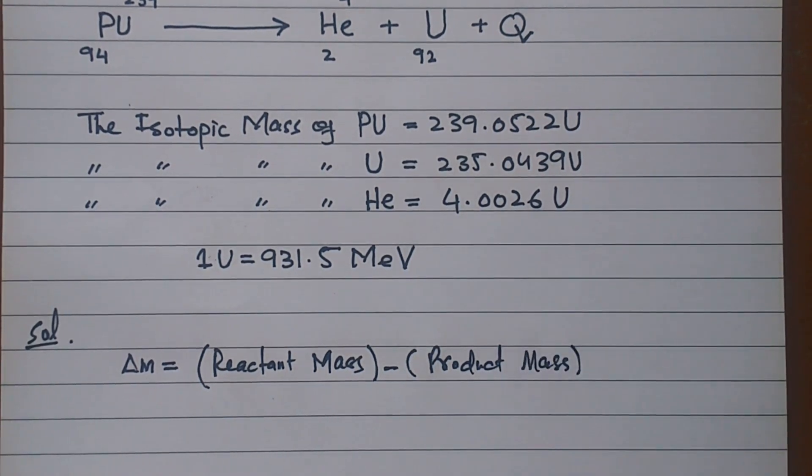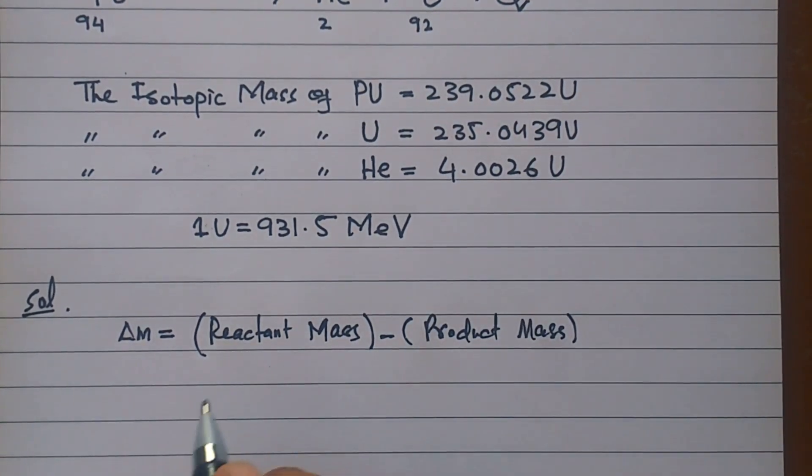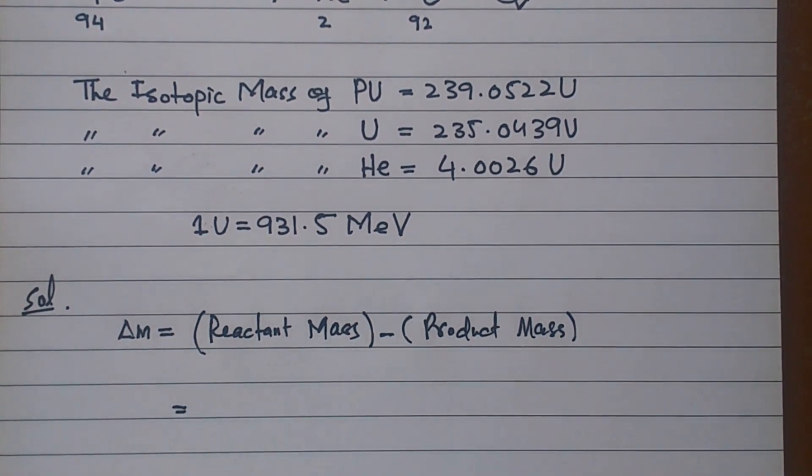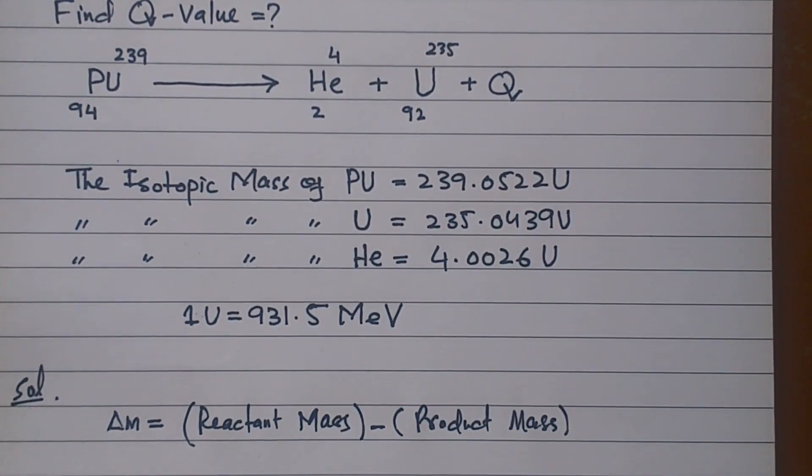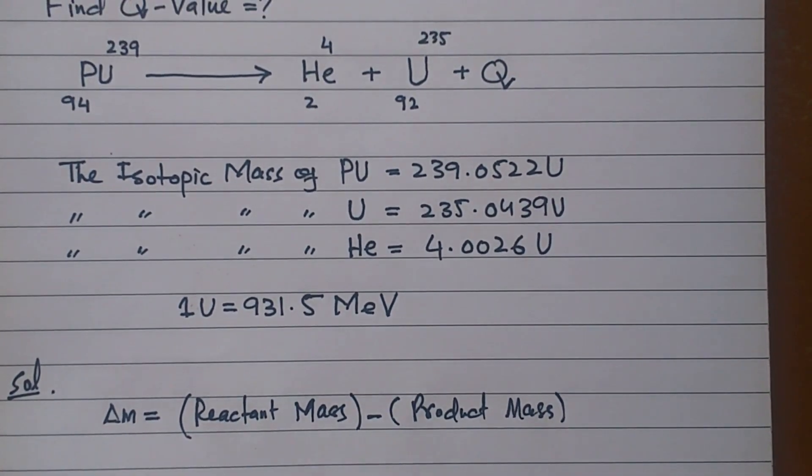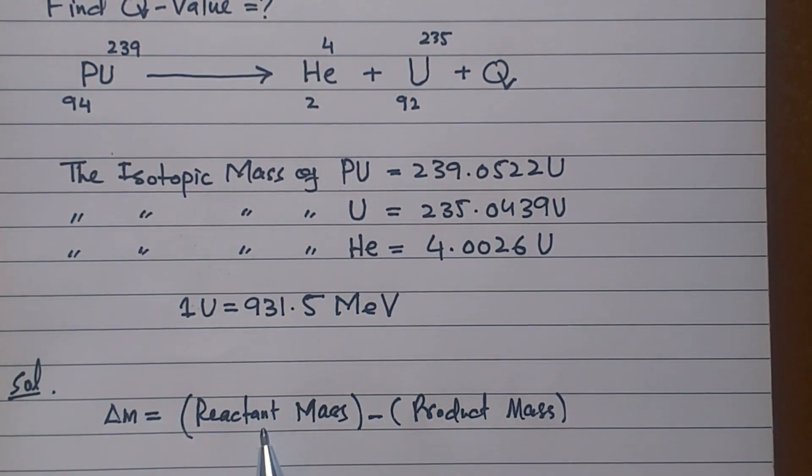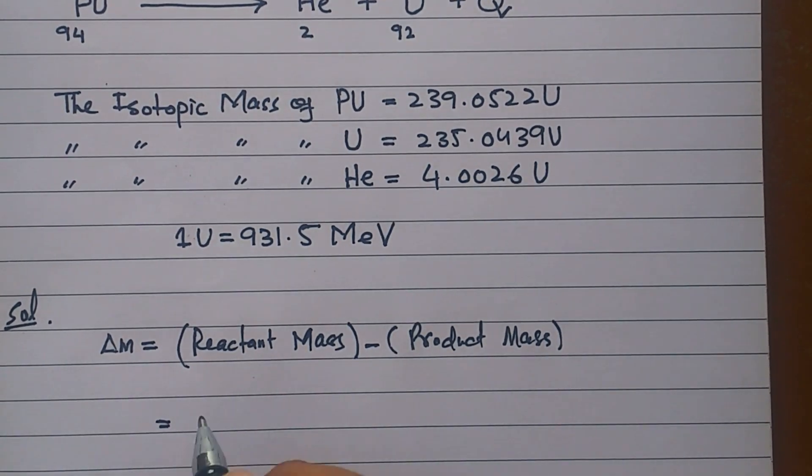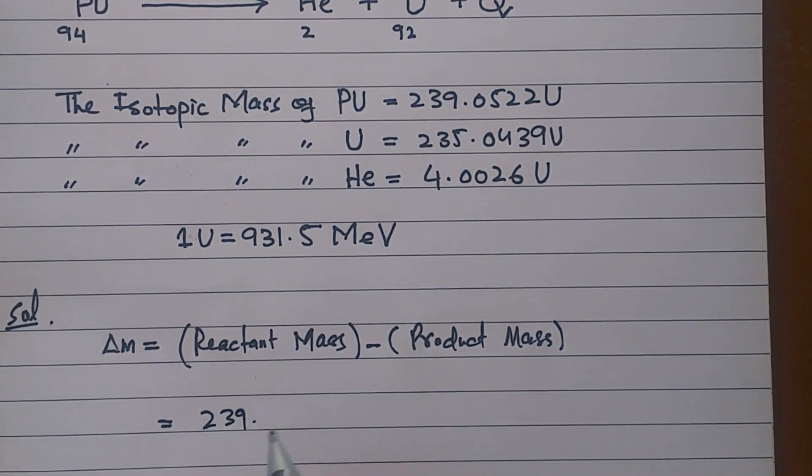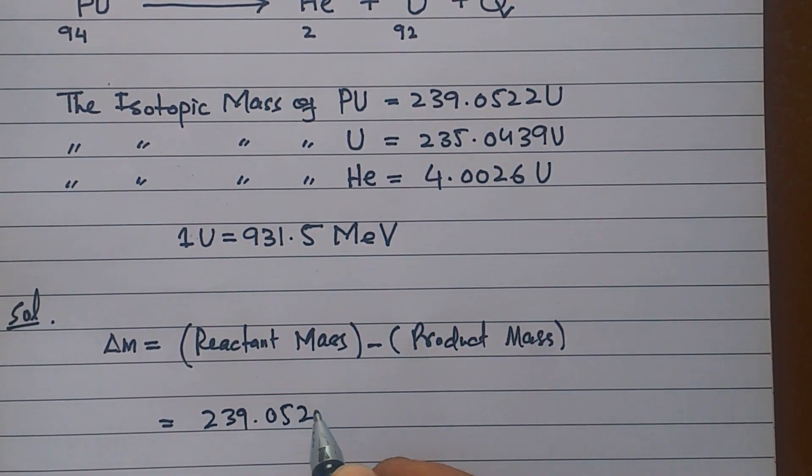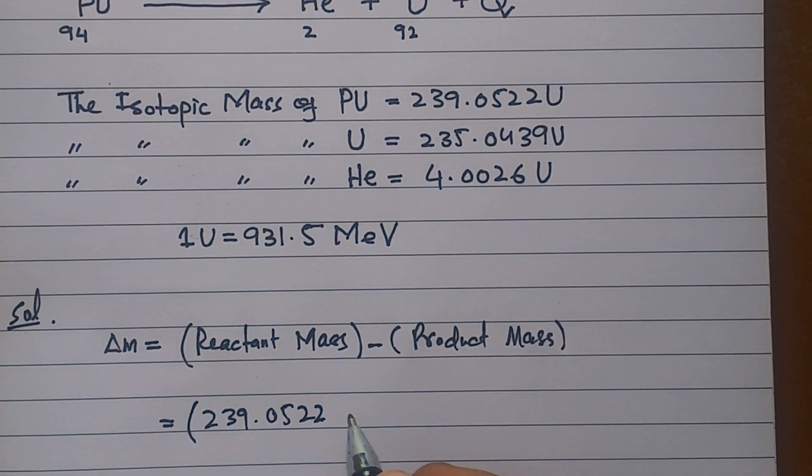Now for reactant, what do we have? If you look at the reactant, we only have plutonium. The reactant mass is 239.0522. And I have bracket and close.